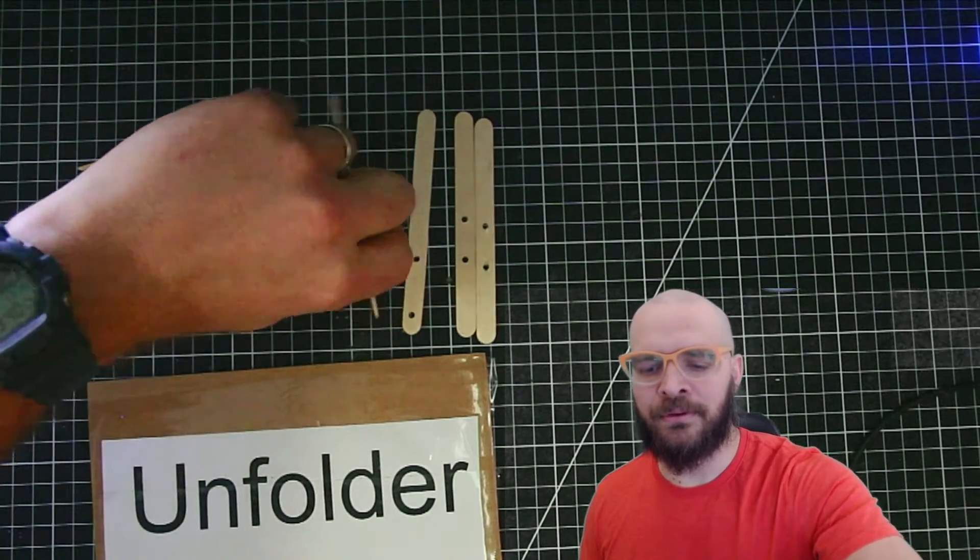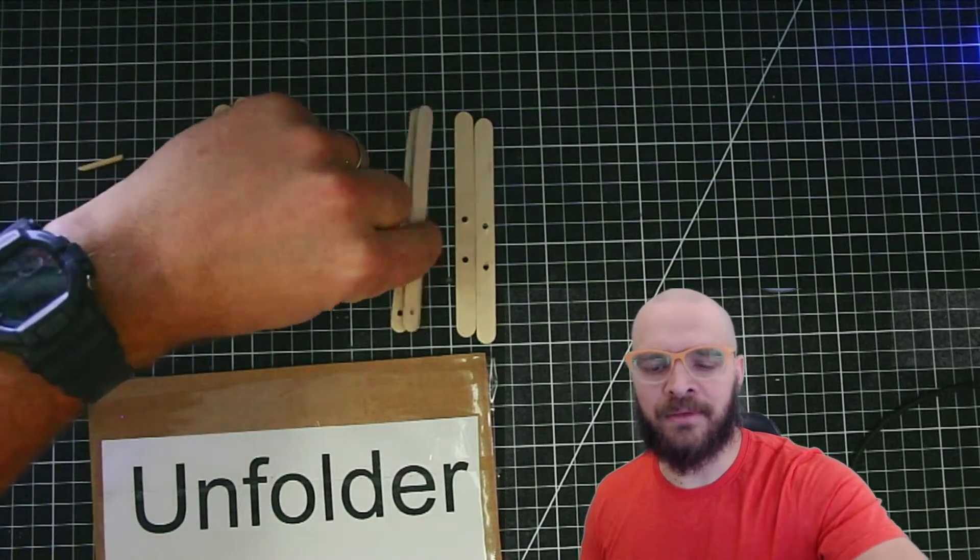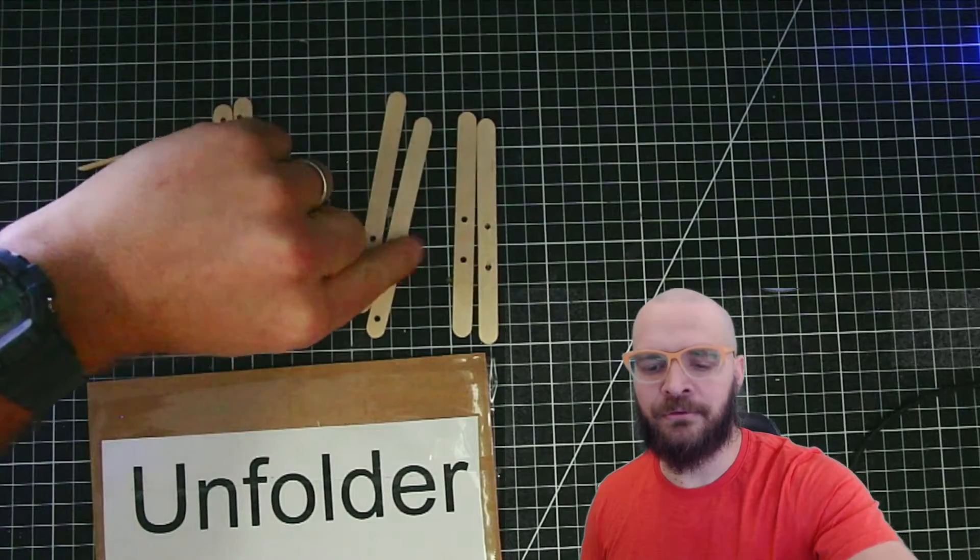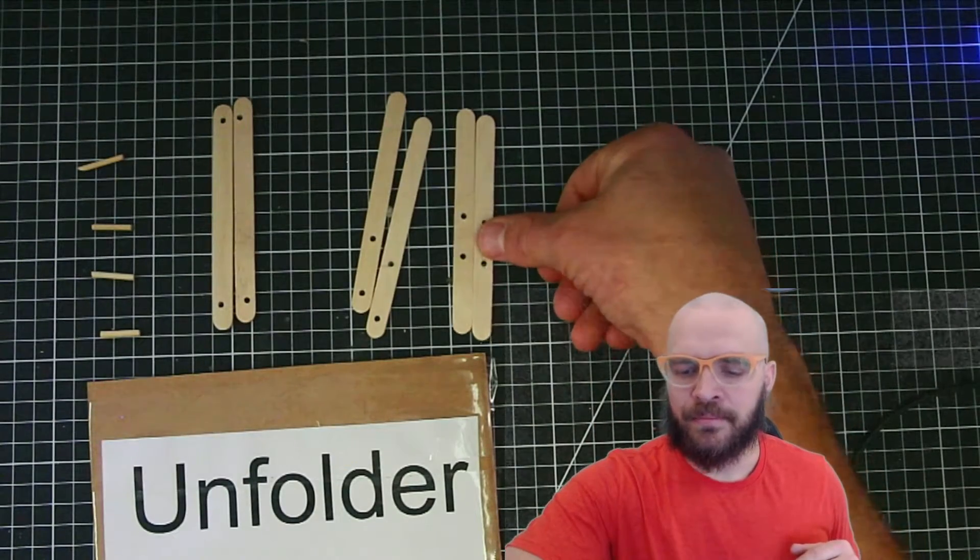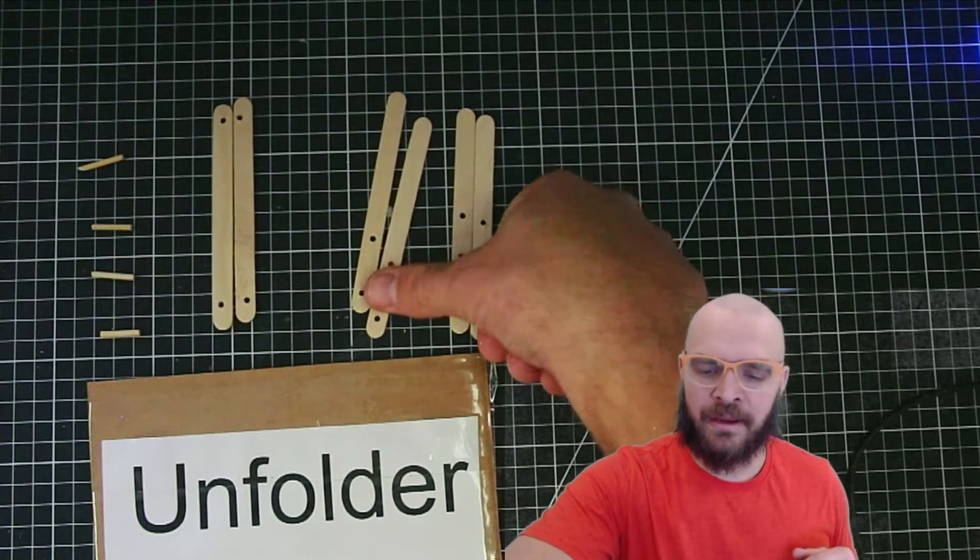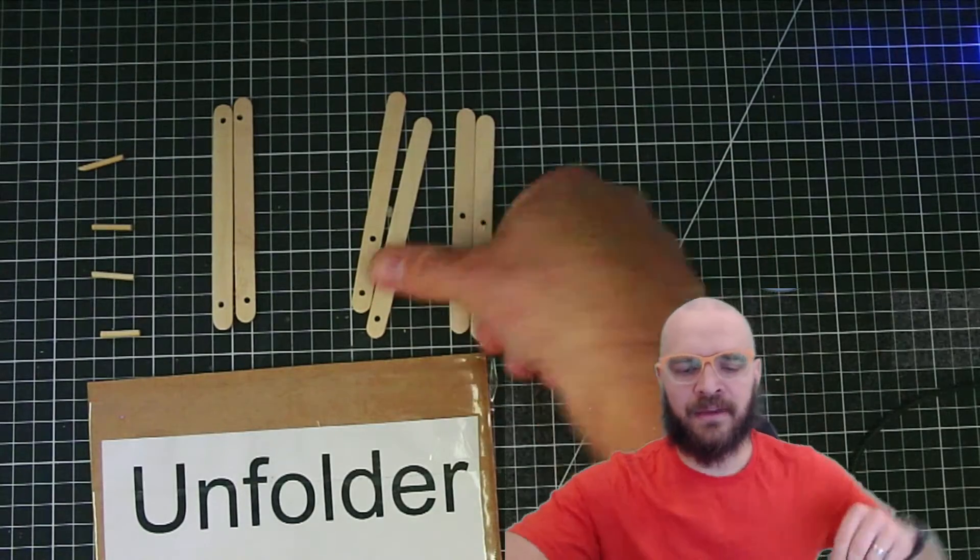We drill these two at the same time so those holes line up, and then drill these two at the same time. To put a gap, my thumb width is the gap I have there, maybe a little more on that side.